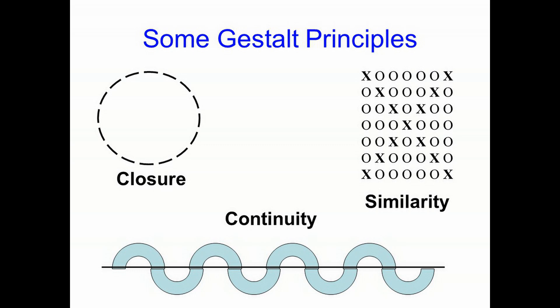Finally, we have the gestalt principle of continuity — one of my favorites. I've drawn a line and you're probably seeing it as a sine wave, going up and down just like a sine wave. But it's not really a sine wave. I've just drawn a line with half a circle above and half a circle below the line, yet we see it as a continuous waveform because of the gestalt principle of continuity. There are other gestalt principles you can read about in your textbook or look at online — I encourage you to do so.